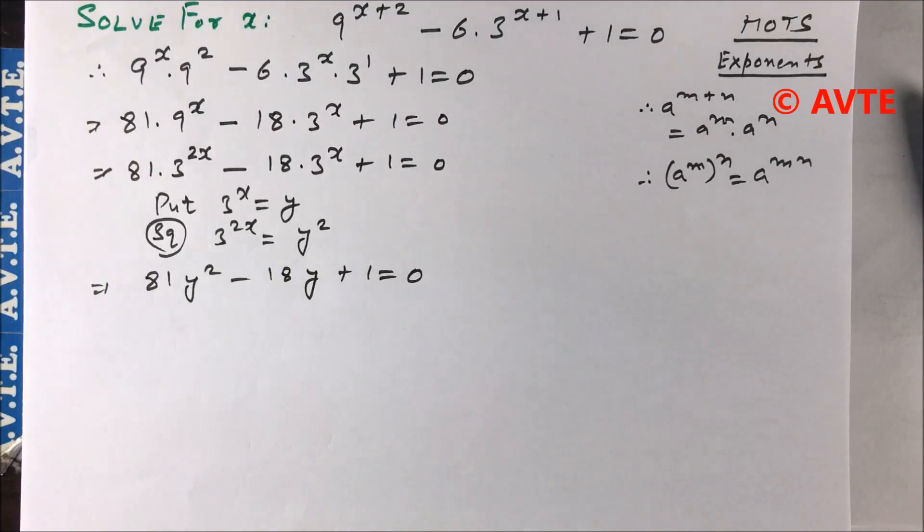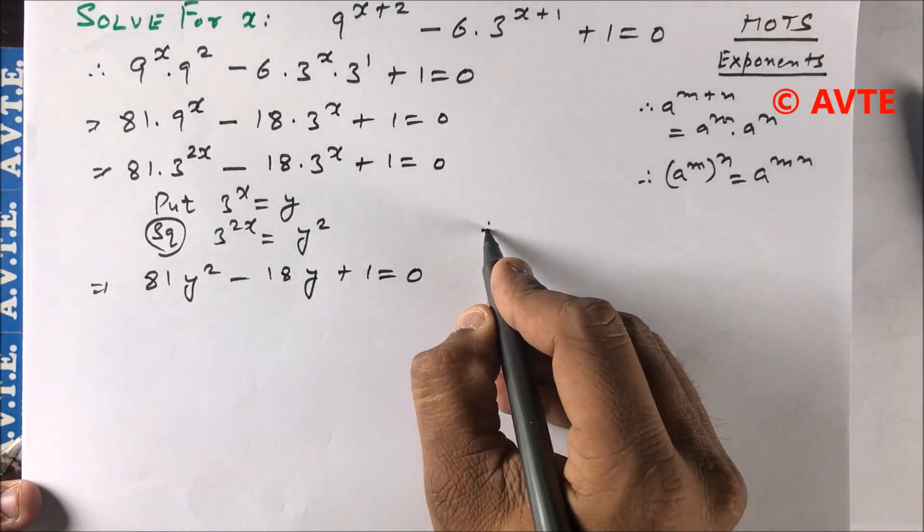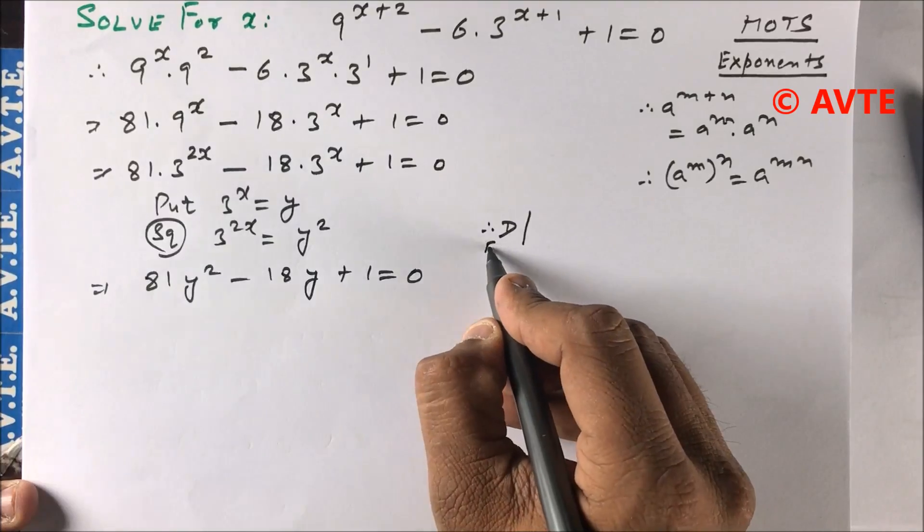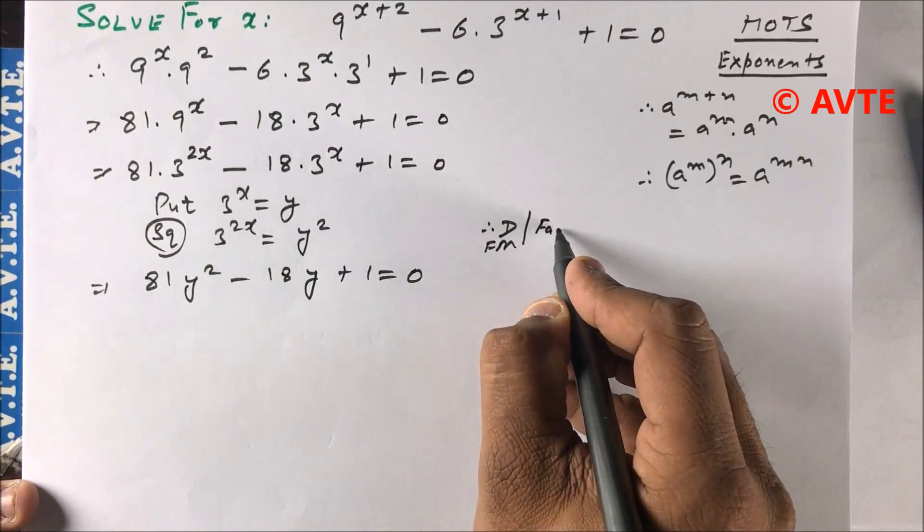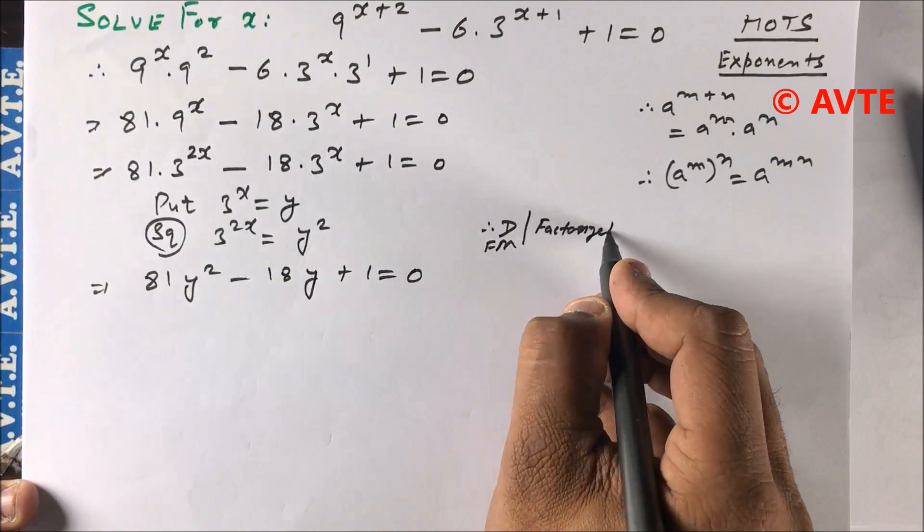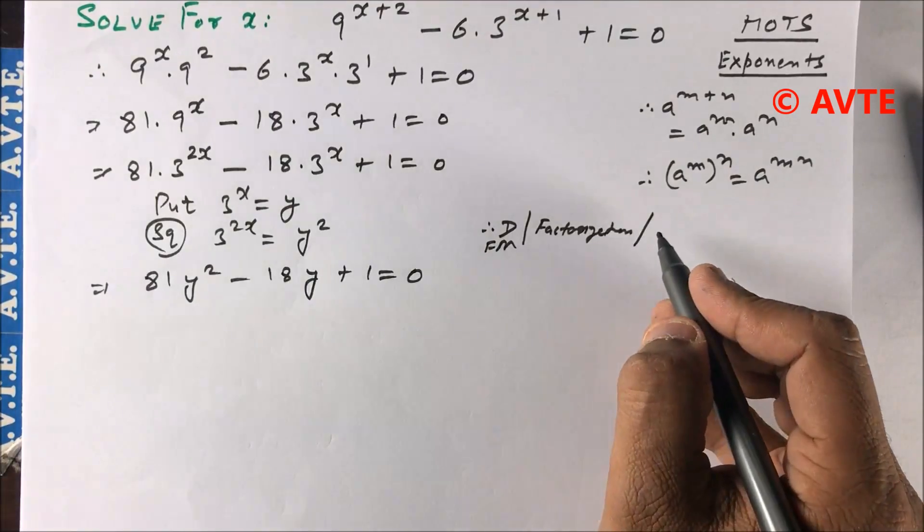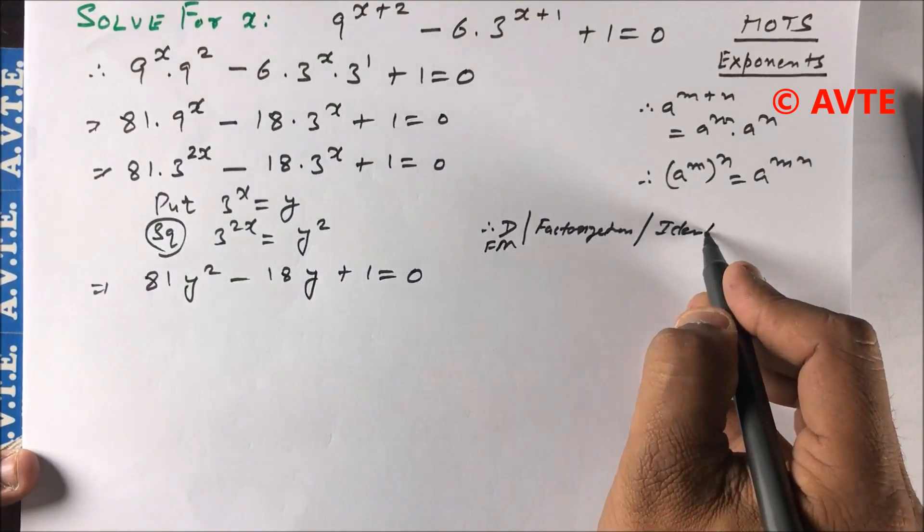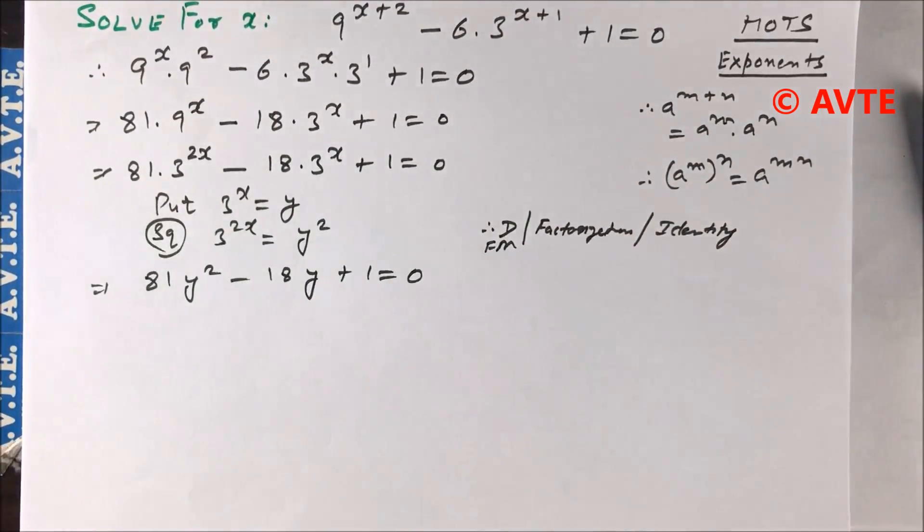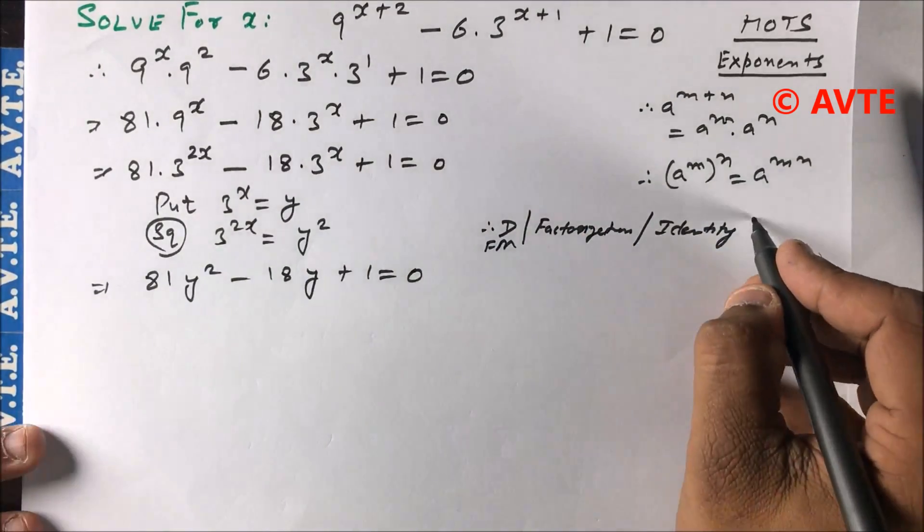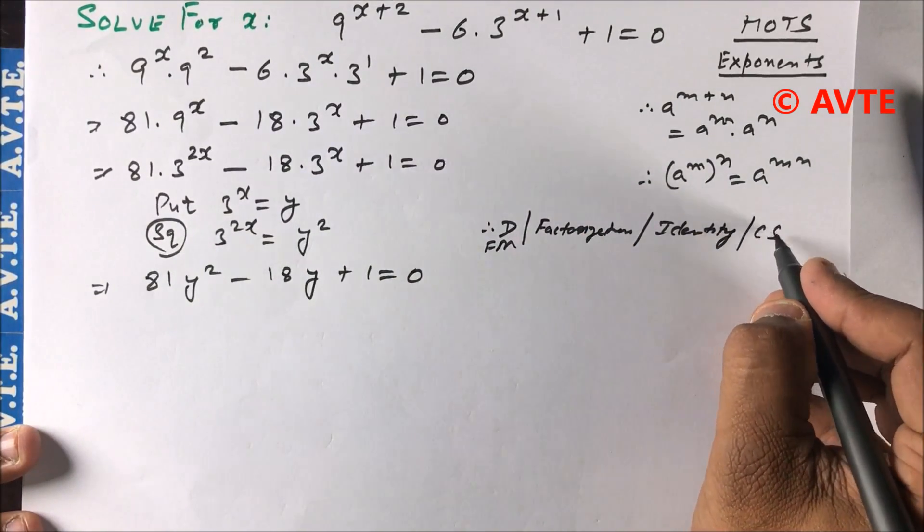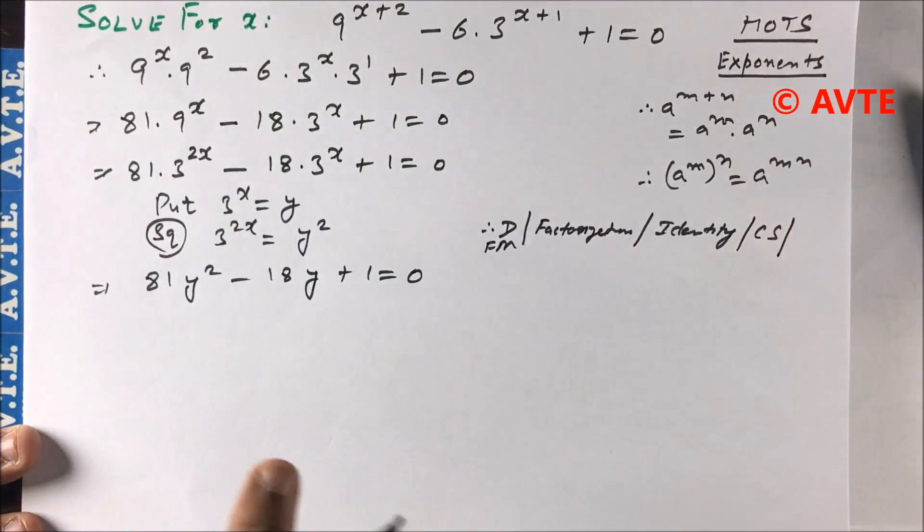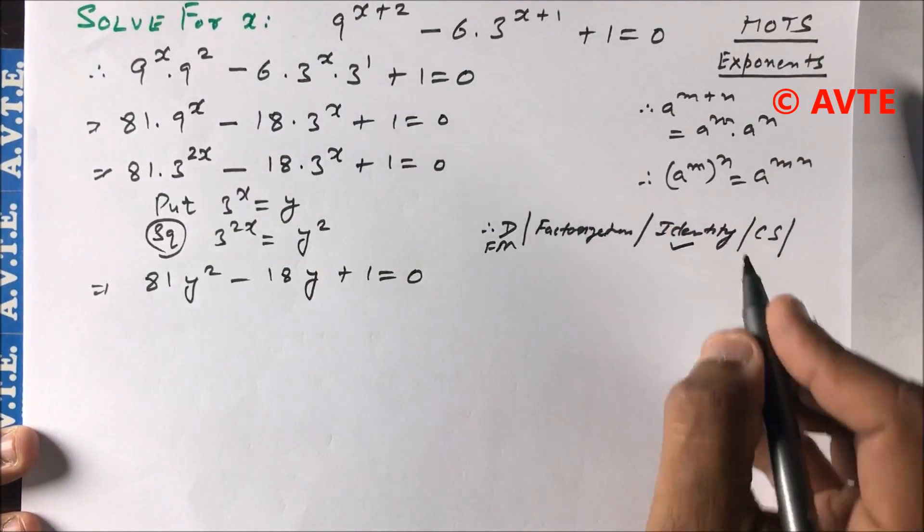Now there is a quadratic in the variable y. We can solve by formula method, or by factorization, or we can apply the identity. I have completing the square method also, but I think the identity is easier.